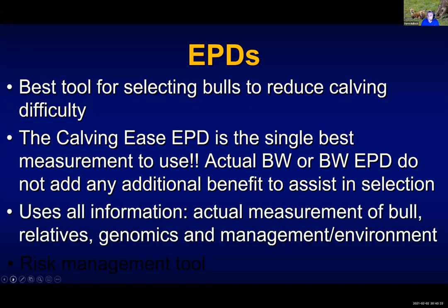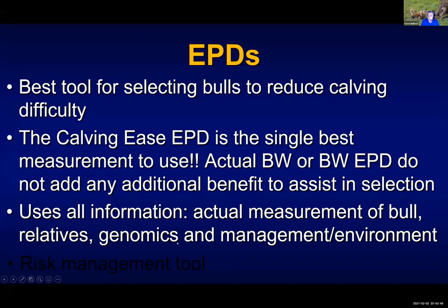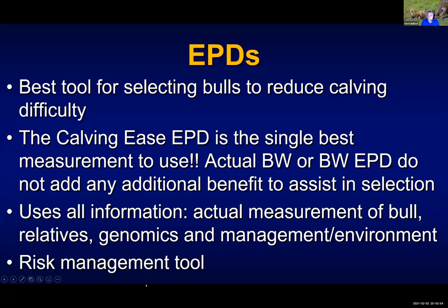The reason EPDs work as well as they do is because they use a lot of information. They use the actual measurement of the bull, his actual birth weight, his actual calving ease scores — that same information on all of his relatives. If you've done genomic testing, it uses that information. And it also takes account of preferential management or environment. So it takes all this into account to give us the single best tool that we can use for selection.